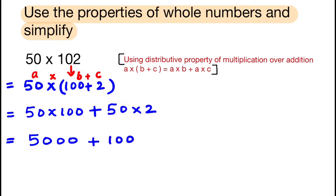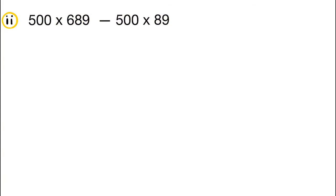50 × 100 = 5,000 and 50 × 2 = 100. So 5,000 + 100 = 5,100.